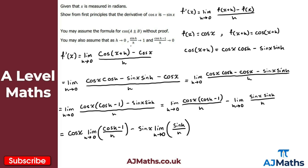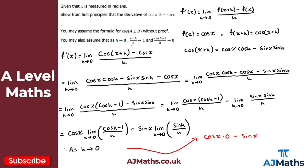As h tends to zero, sin h over h tends to one, and cos h minus one over h tends to zero. So we get cos x times zero minus sin x times one, which simplifies to zero minus sin x, giving us minus sin x — as required.